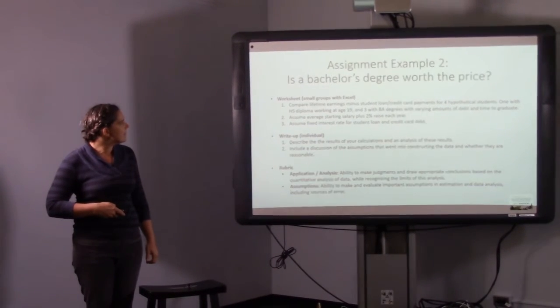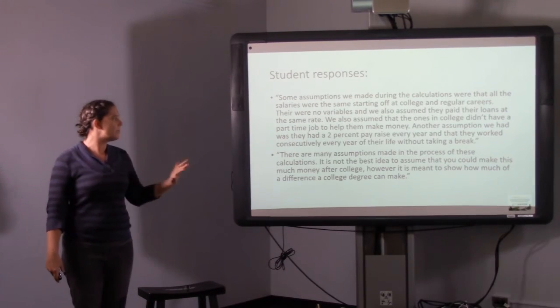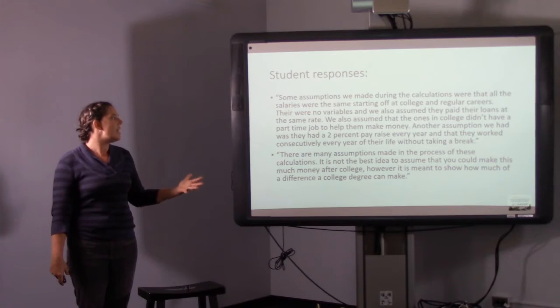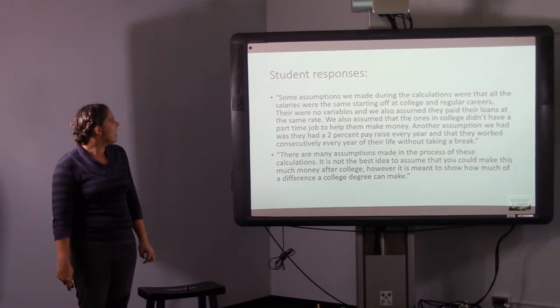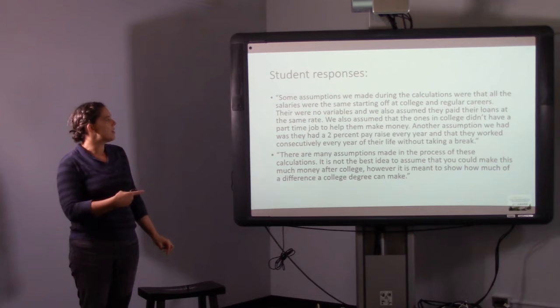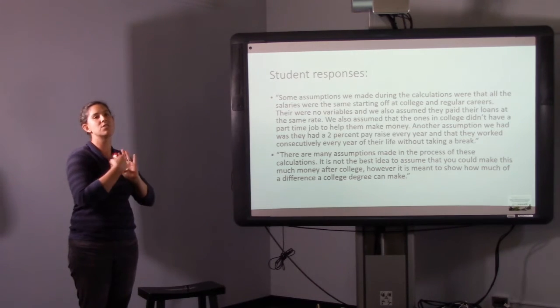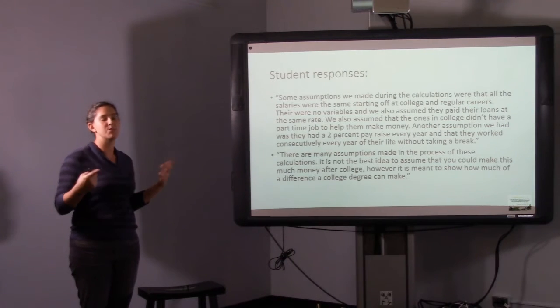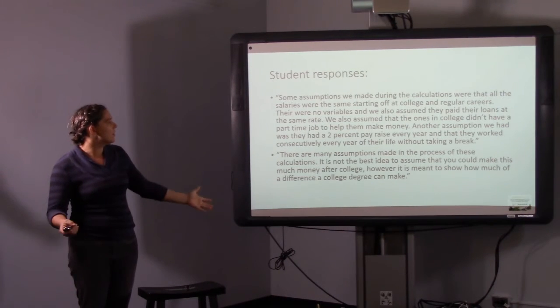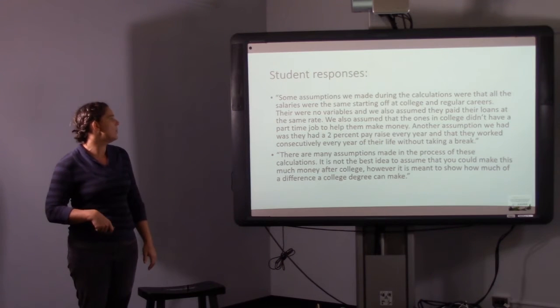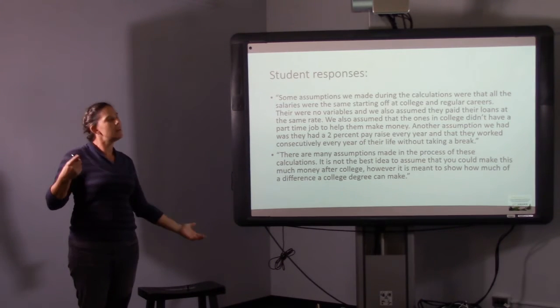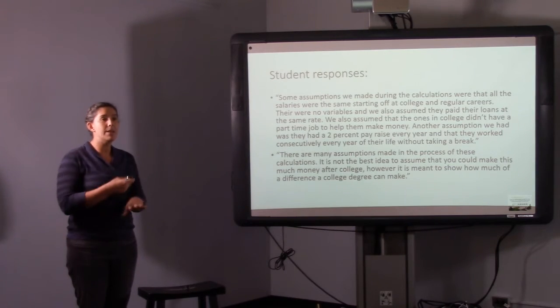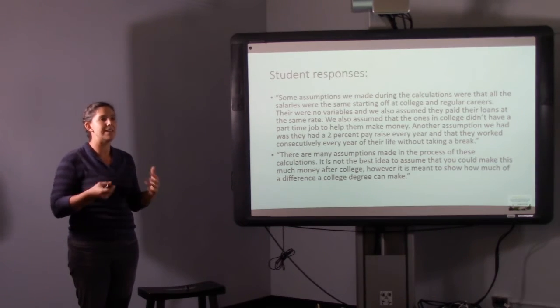This one was focused on the application and the analysis. Like what do the numbers mean? And then also the assumption that we were going into this assignment. So, some examples. So here this first example was what was a common example is that students were usually able to pick out what the assumptions were. The salaries were the same starting off at college. So three of the students all graduated college and they all, we assumed that they all had the same starting salary. And they paid their loans at the same rate. We assumed a 2% pay raise every year. And then they were consecutive. So there's lots of assumptions going in. And most of them were able to sort of identify some assumptions.